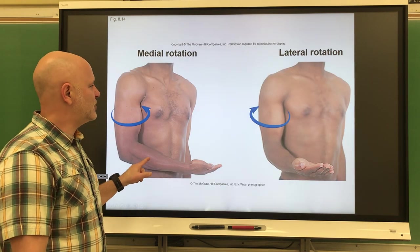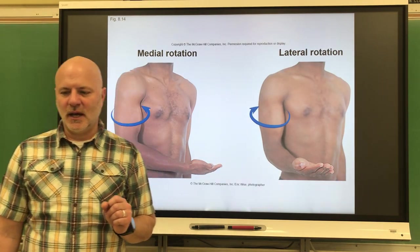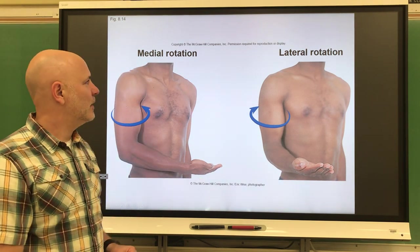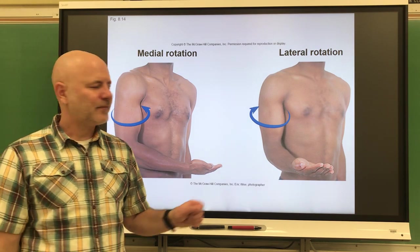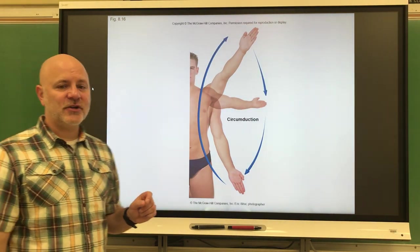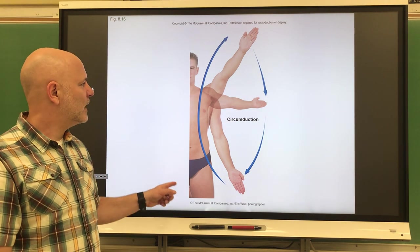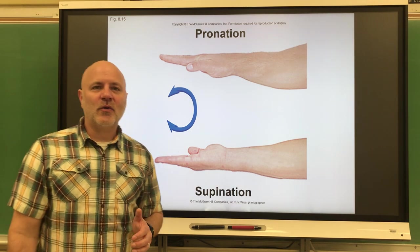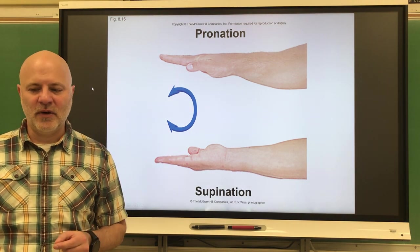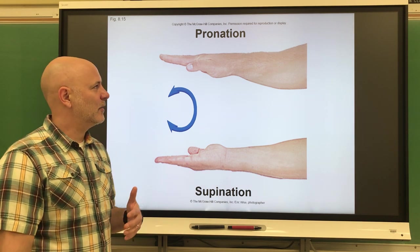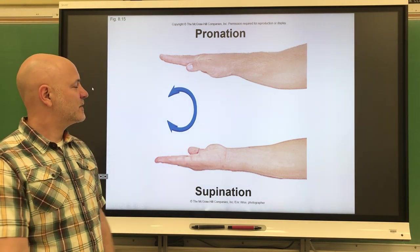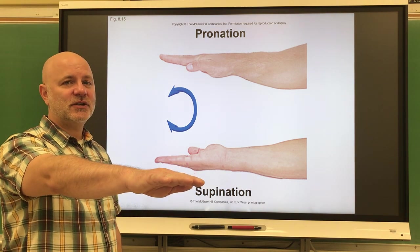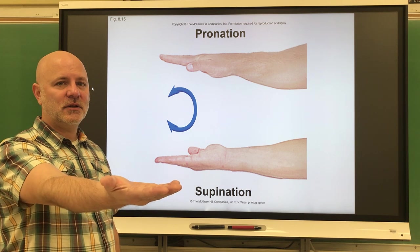Next is rotation — the movement of a part around an axis. Circumduction is a movement of a part in a wide circle, like moving your arm in a large circle. For specific rotations of the lower arm: pronation is a rotation where the palm faces down. Supination is a rotation of the lower arm so the palm faces up.